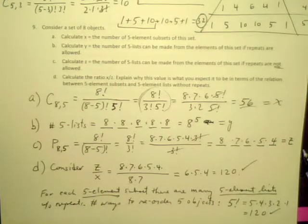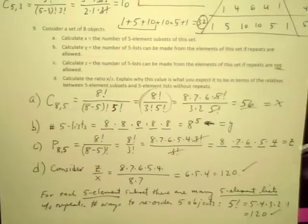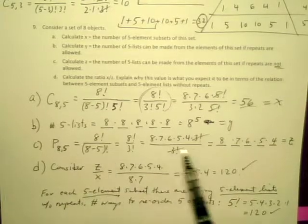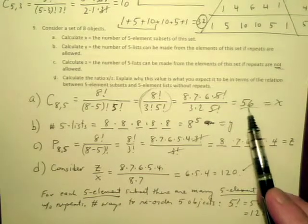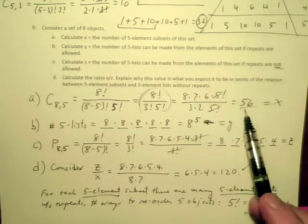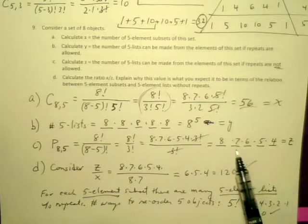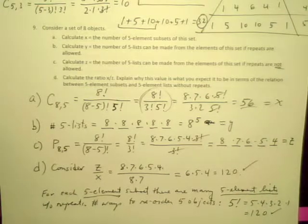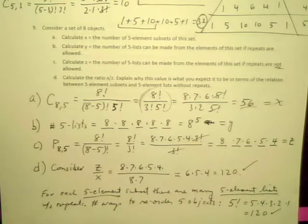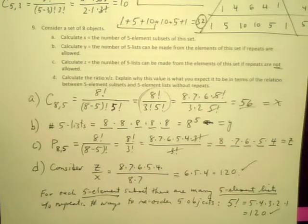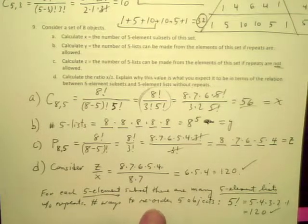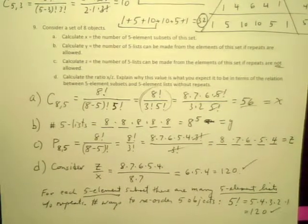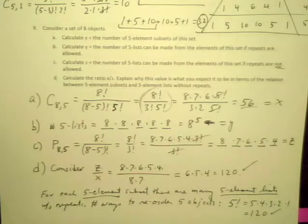We expect there to be 120 times more ordered lists than there are subsets, because for every subset, there are 120 different lists that correspond to that subset. That's the idea on problem number 9. I've given some examples just like this in the lectures as we went.